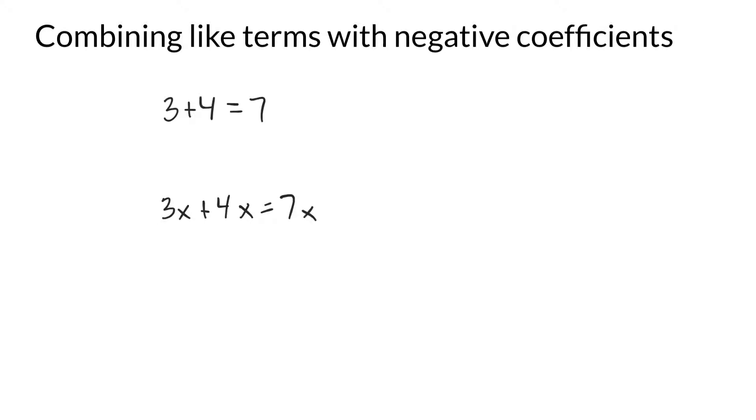First off, this means 3 times some number plus 4 times some number. And it's a pretty bold statement that 3 times a number plus 4 times a number is 7 times that same number. And we could break this down using the distributive property where we could call this 3 plus 4 times that number. And 3 plus 4 is obviously 7 times the number.